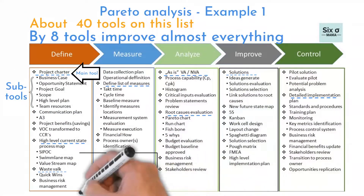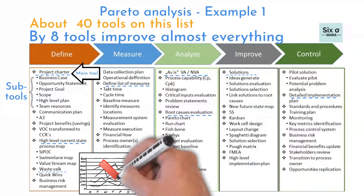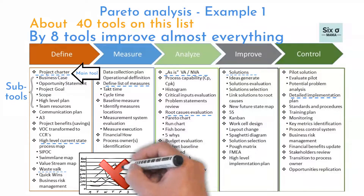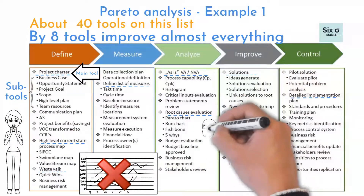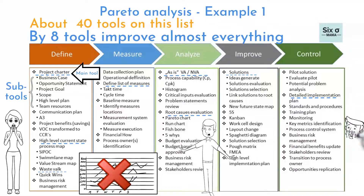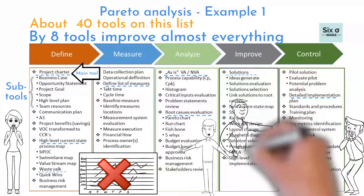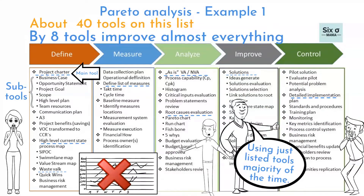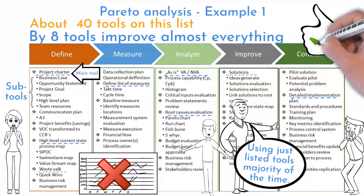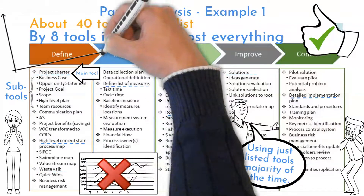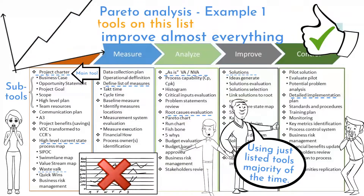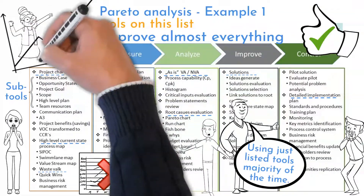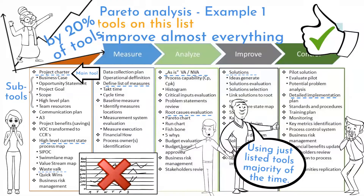Have you noticed that there is no heavy statistics at all? Statistics scares people the most about Six Sigma, but there is nothing to be afraid of. These tools are pretty easy to learn and use. I use them over and over again. Imagine — you can improve a currently malfunctioning process by 80% using just these 20% of tools. What great progress! Do not seek perfection in your projects.